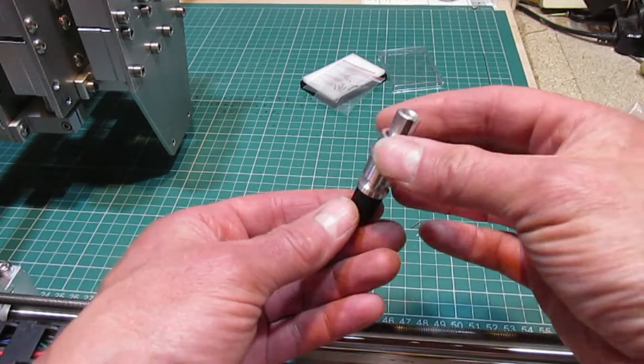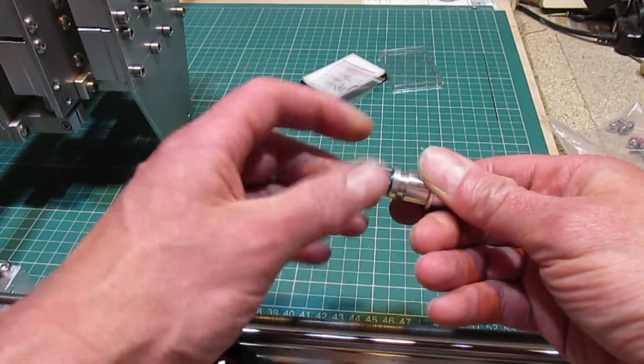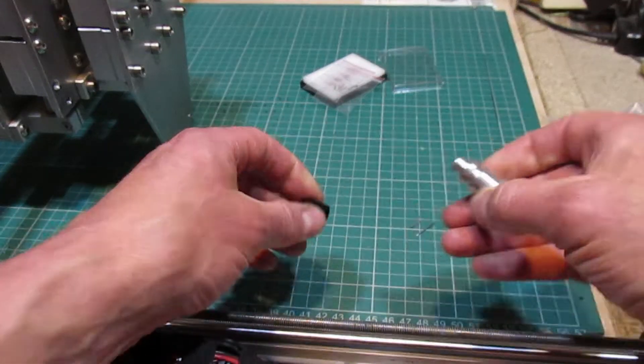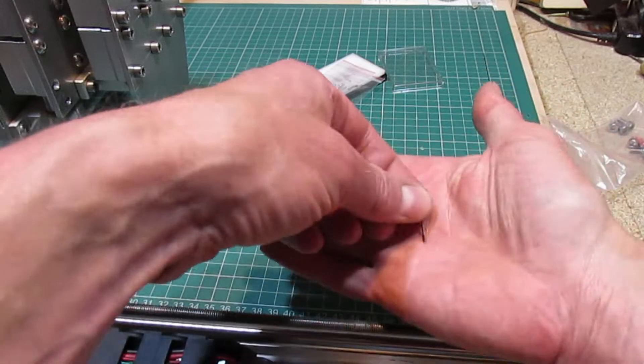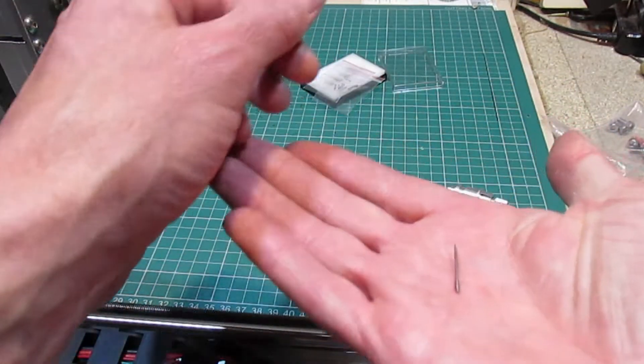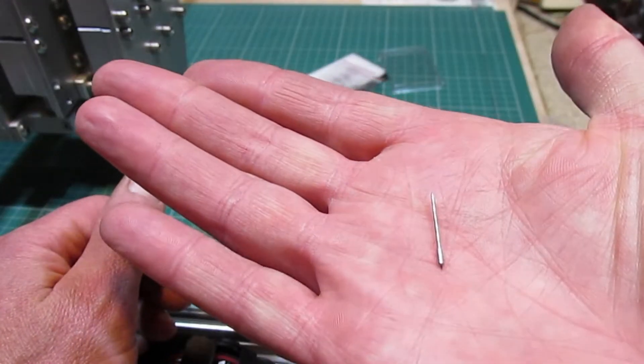This is the CB09 vinyl cutter I purchased from eBay, and this is a tiny drag blade with a 45 degree cutting angle.